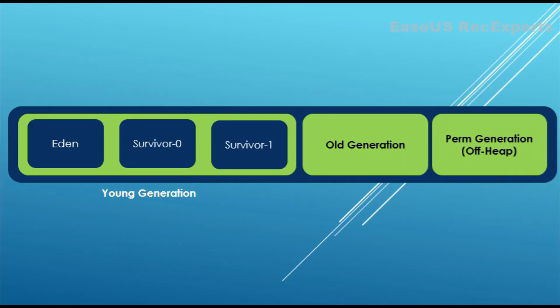Heap memory itself is mainly divided into two components: young generation and old generation. There is one off-heap component as well, which is also known as permanent generation. Most of the memory allocation and deallocation will happen under young generation and old generation only.